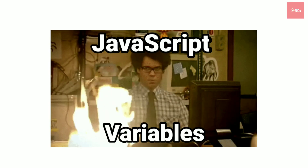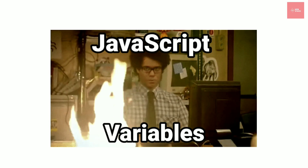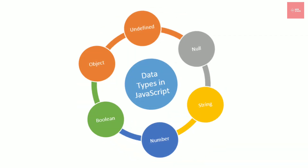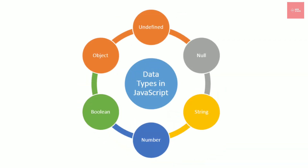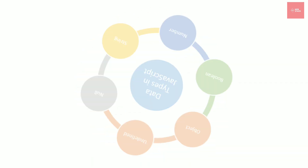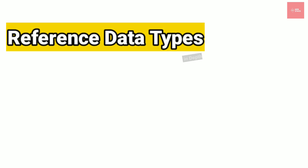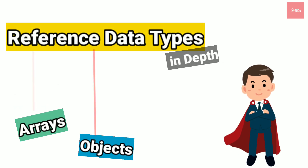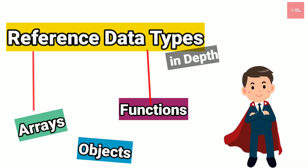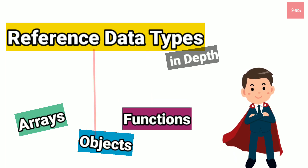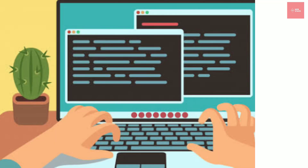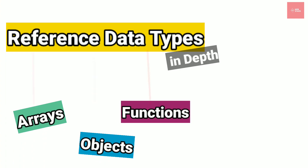In the process of learning JavaScript variables, we have already seen the first set, that is primitive data types. Now in this video, we will be looking at the different reference data types we have in JavaScript and how we can declare and use them inside programs. So let's dive into it.